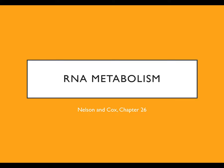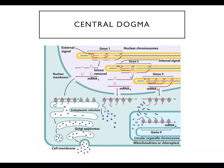The next chapter is called RNA metabolism because it's about how RNA is made and used. Really, what it's about is transcription. Transcription is important because it is the first step in gene expression. The process of gene expression is so universal and so important that the basic process is referred to as the central dogma of biology.